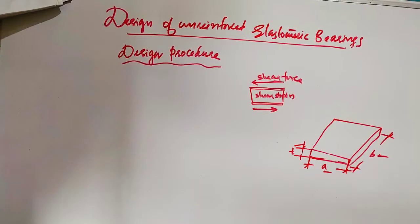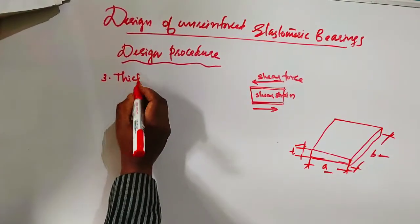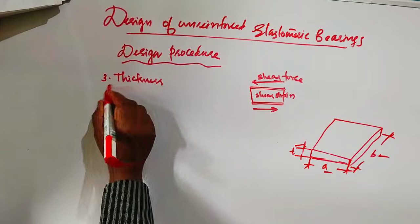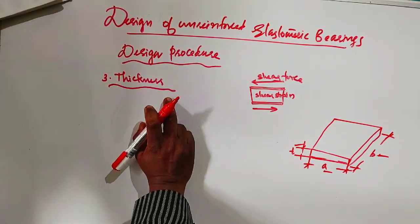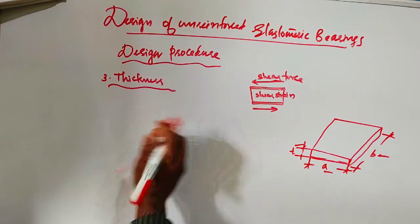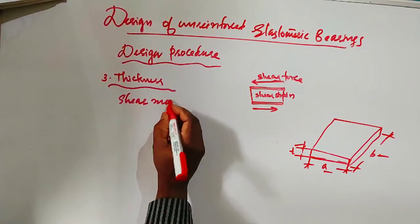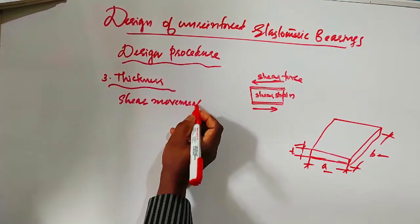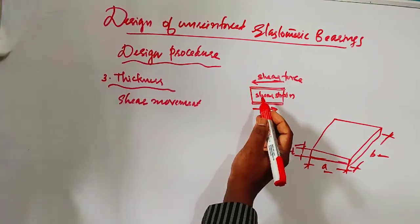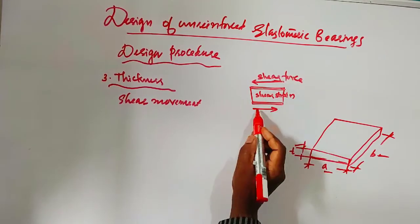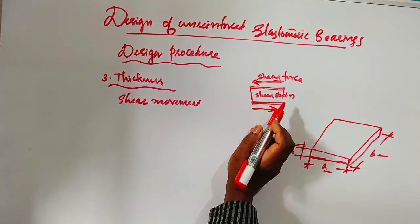In this section, step 3 is thickness calculation. The thickness of a bearing is governed by its shear movement. See in this figure, shear forces acting parallel and the shear strain developed there.